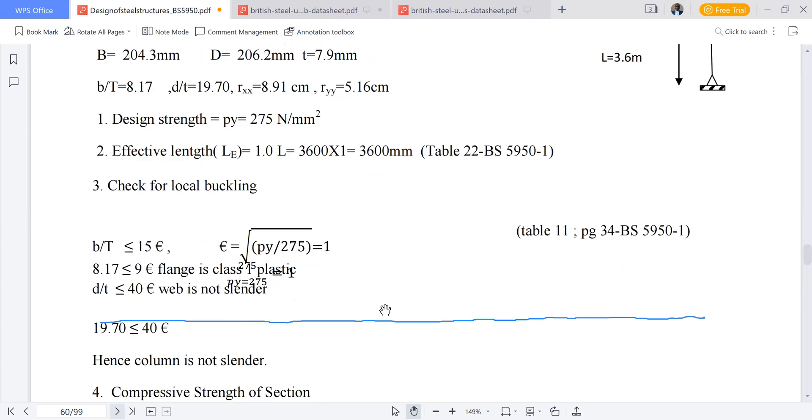Now we can check for local buckling. We have checks to perform. For example, based on Table 11 of BS 5950, we have the value of b over t should be less than or equal to 15 epsilon. Epsilon is given by square root of 275 divided by 275. For our case, 275 over 275 is 1, square root of 1 is 1.